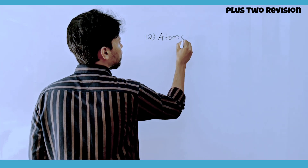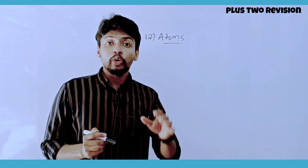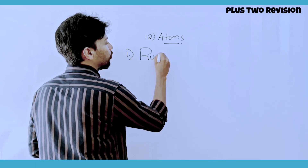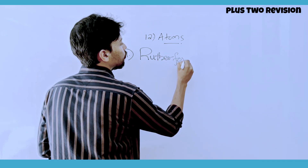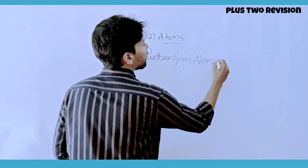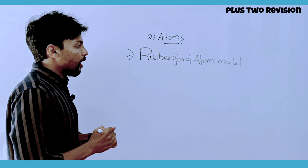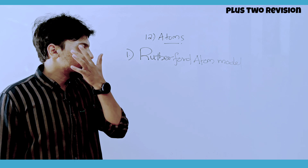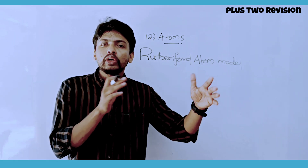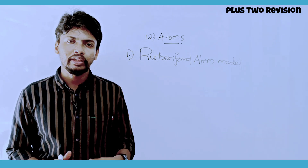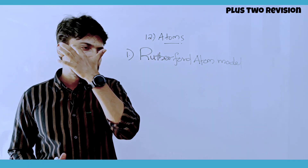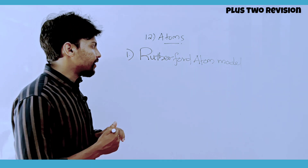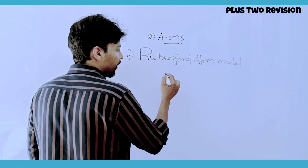Next is the Atoms chapter. The key topic is the Rutherford Atom Model — its postulates and the Alpha Particle Scattering Experiment. Most alpha particles passed through the gold foil without any deviation. We will study these postulates.